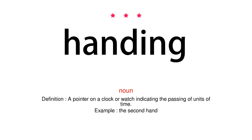Noun. Definition: A pointer on a clock or watch indicating the passing of units of time. Example: The second hand.